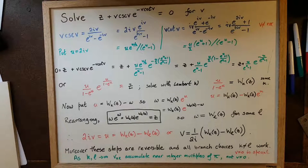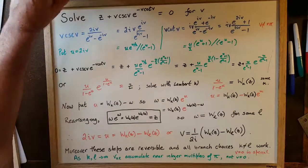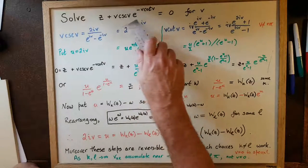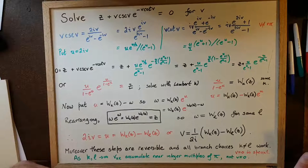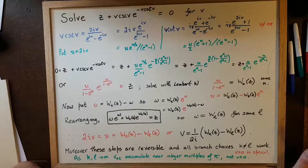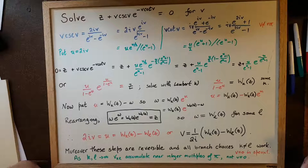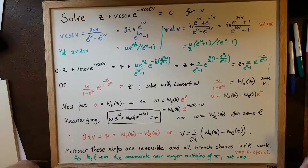We are going to solve a particular nonlinear equation. The equation looks very strange: z plus v cosecant v times e to the minus v cotangent v. We want to solve this equals 0, not for z, which would be easy, but instead for v. The main reason this equation is interesting is that it occurs in the denominator of a particular integral for the Lambert W function, found at orcca.on.ca/LambertW.